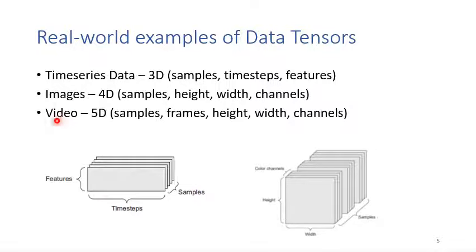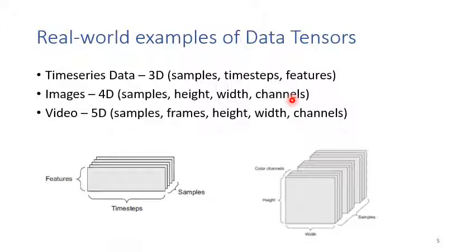The second example is images. Images are four-dimensional data because one image includes height, width, and channels. Colorful images include three color channels per pixel: red, blue, and green (RGB). So for colorful images, the data dimensions are: samples, height, width, and channels. For grayscale images, it can be 3D — samples, height, and width — with only one channel.